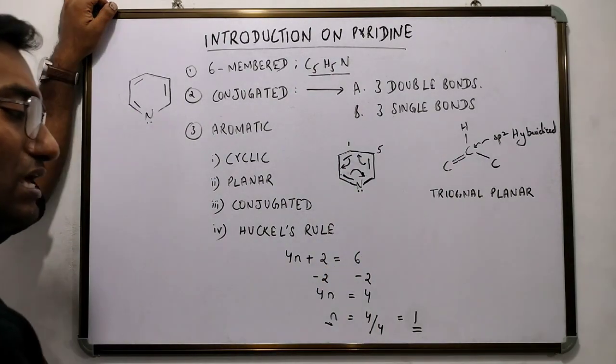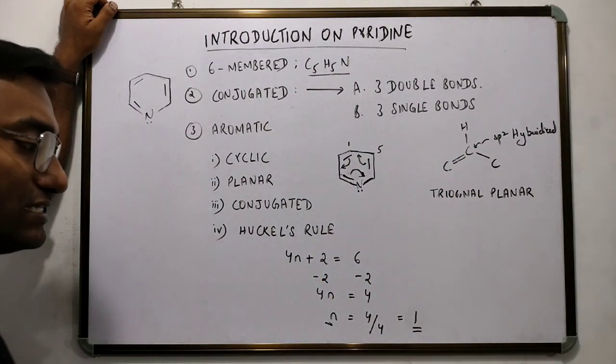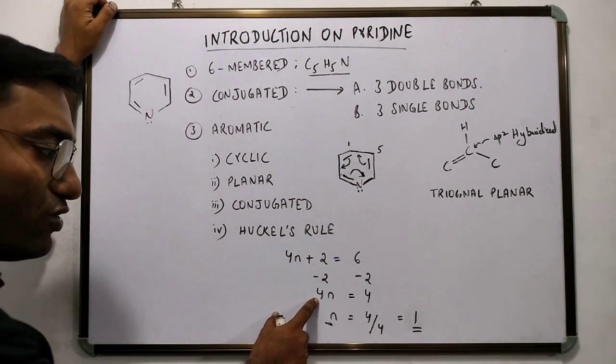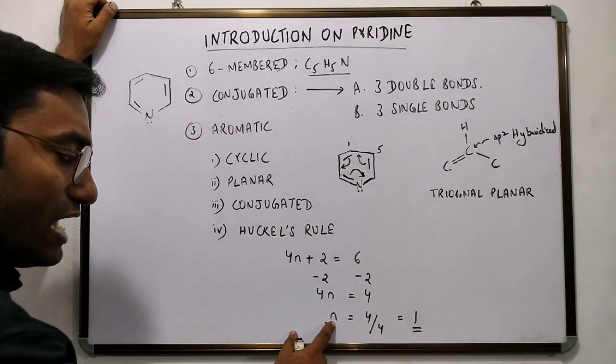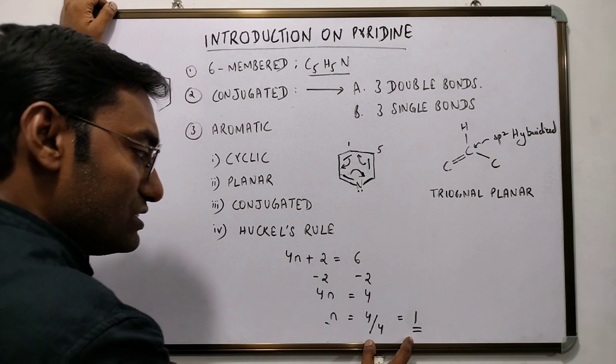4n plus 2 equals 6. Subtract 2 on both sides. That would lead to 4n equals 4. n equals 4 by 4, which is 1.